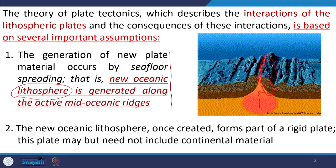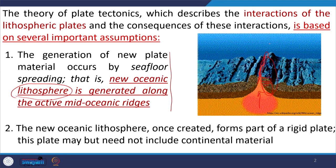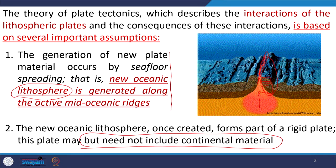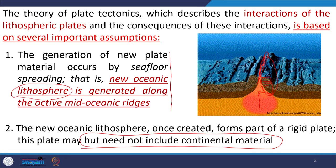The new oceanic lithosphere once created forms part of the rigid plate, and it may but need not include continental material. An oceanic plate may be entirely oceanic and independent, but a continental plate may not be entirely continental or independent. The material added at the mid-oceanic ridge becomes part of the oceanic system only, not the continental system. Continental material is not created at the mid-oceanic ridge — it is the oceanic lithosphere that is created there.